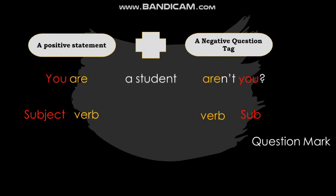Take the sentence: 'You are a student.' The question tag form here is 'aren't you.' 'You' is the subject and 'are' is the auxiliary verb. In a question tag, the verb comes first and then the subject — so 'aren't you'. The 'not' creates the negative question tag, and the subject and verb positions are swapped compared to the statement.